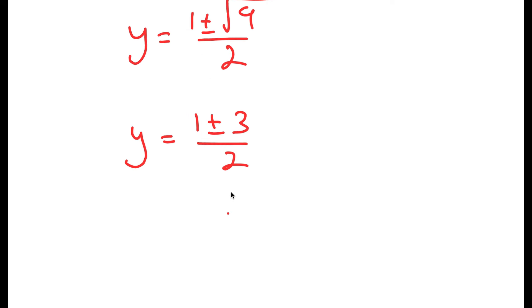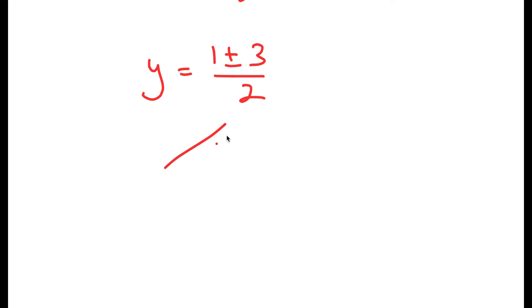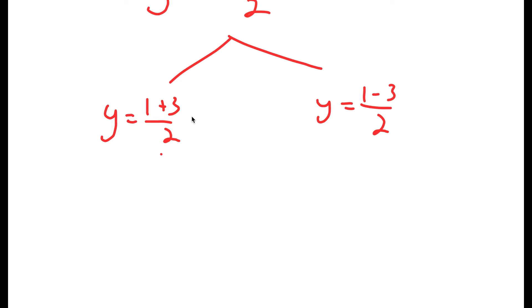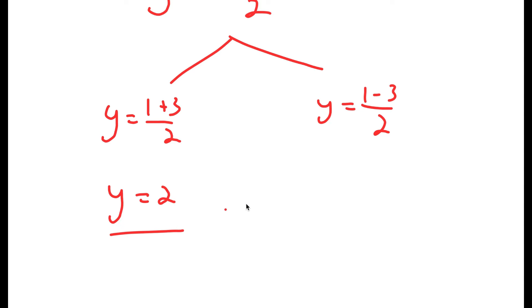This gives me two solutions. I have y equals 1 plus 3 over 2, and y equals 1 minus 3 over 2. 1 plus 3 is 4, and 4 divided by 2 is 2, so my first solution is y equals 2. 1 minus 3 is negative 2, and negative 2 divided by 2 is negative 1, so my second solution is y equals negative 1.